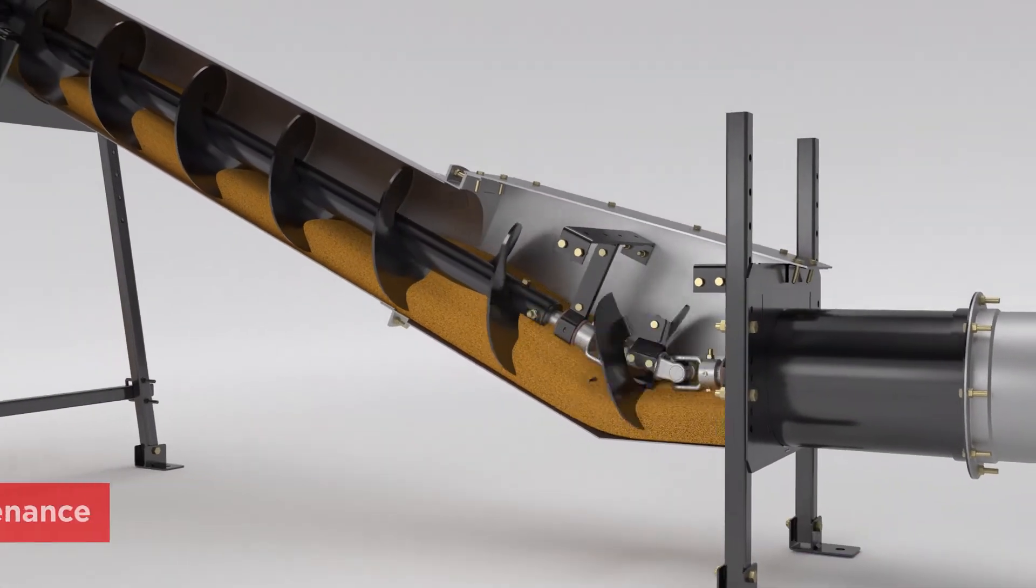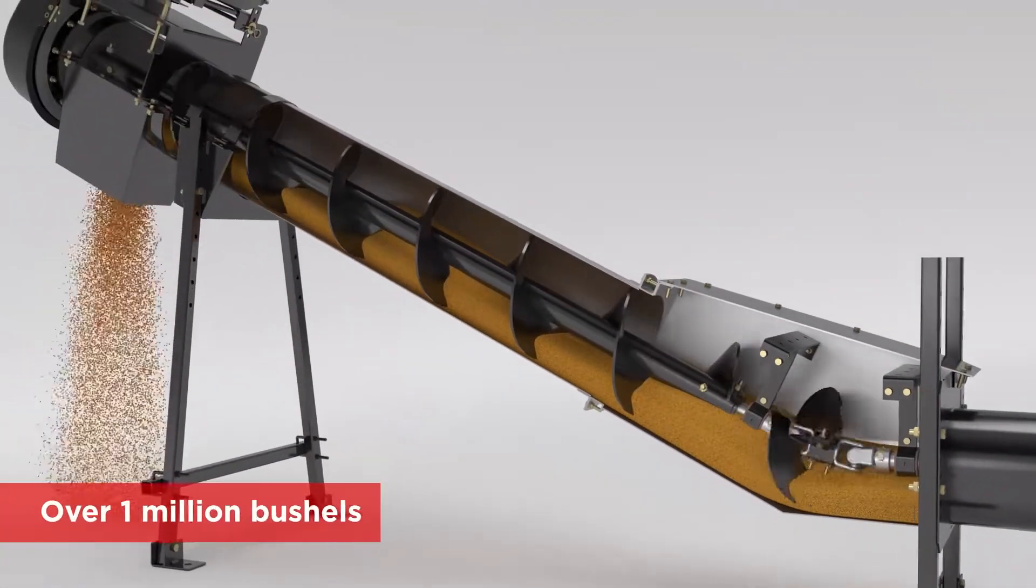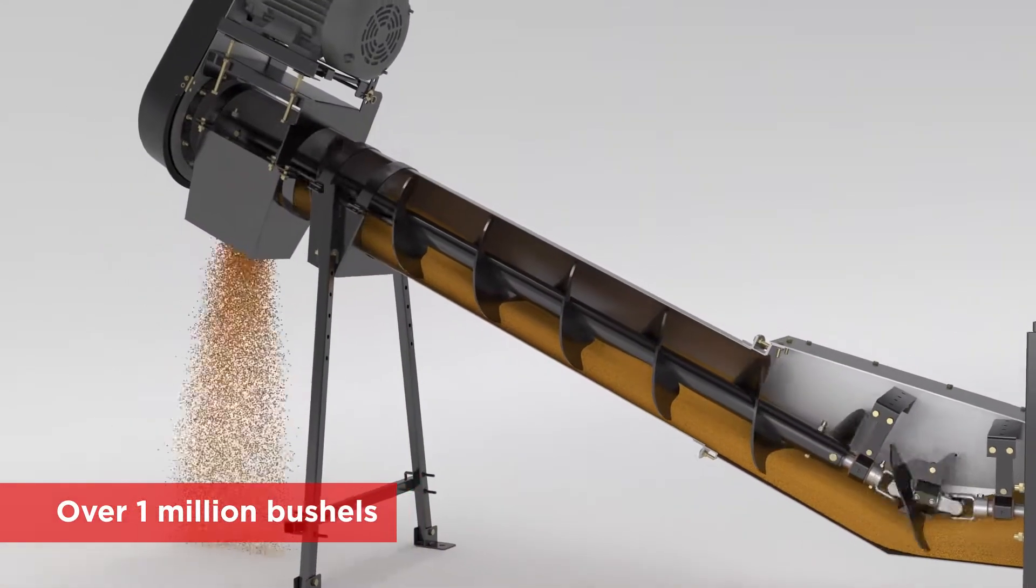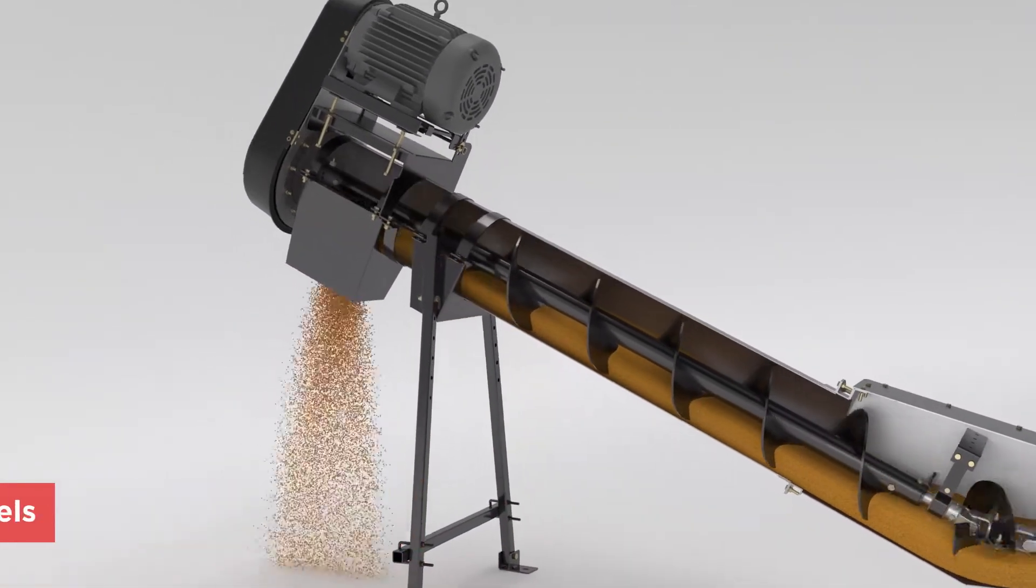Brock engineers proved their durability by running more than a million bushels of grain through the incline power head with it still running strong.